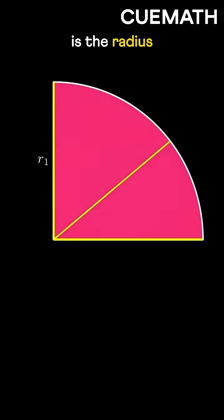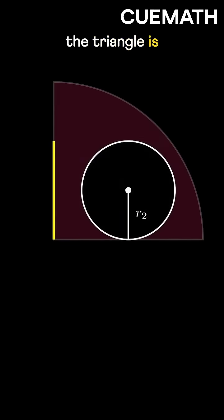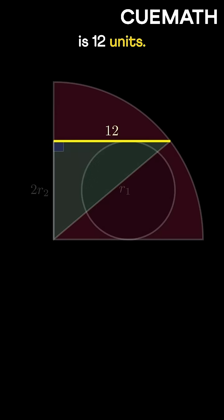The hypotenuse is the radius of the quarter circle, R1. One leg of the triangle is the diameter of the smaller circle, which is 2R2. The other leg is 12 units.